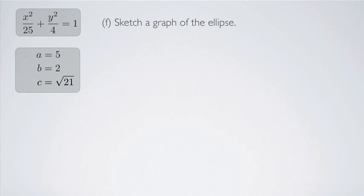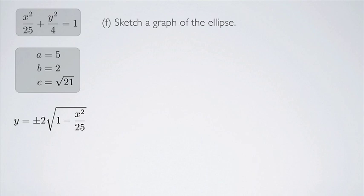Finally, we sketch a graph. On a calculator, first solve for y: you get y = ±2√(1 − x² / 25). Since the calculator can't graph the ellipse all at once, graph two separate equations: y = +2√(1 − x² / 25) and y = −2√(1 − x² / 25). Putting them together gives the ellipse.